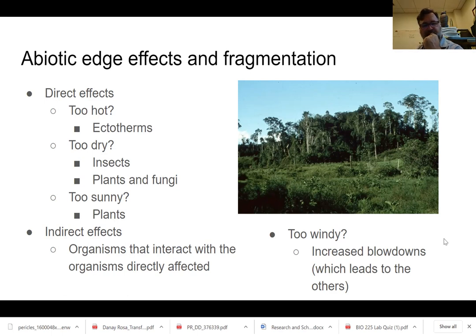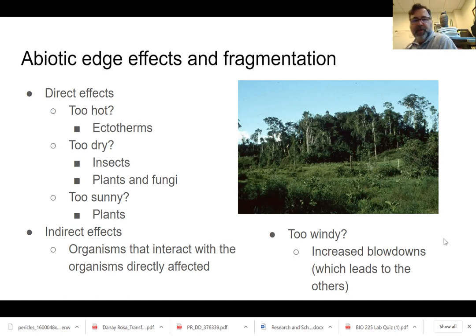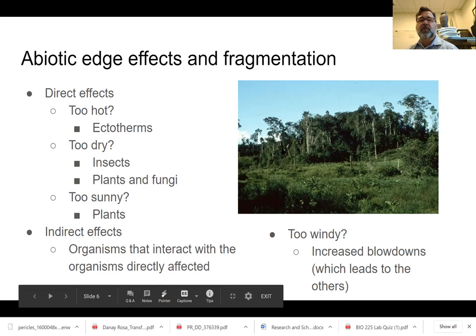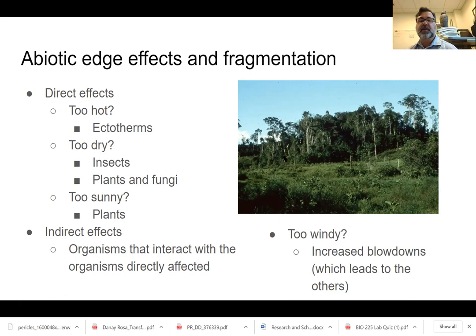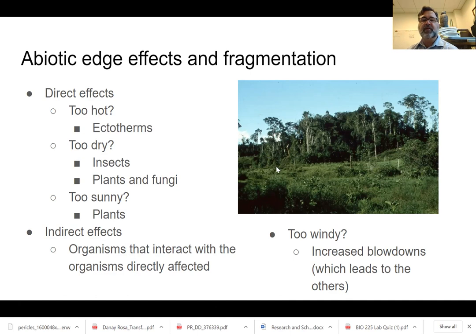Then you have indirect effects — the things that follow from the previous things. For example, if you rely on a particular plant for pollination and that plant disappears from the edge, that pollinator will disappear from the edge as well. Another direct effect that leads to indirect effects is wind. The prevailing winds hit this edge, and you can see the canopy on this side is much lower because there've been several blowdowns. Trees exposed to prevailing winds get knocked down, so you get really shrubby growth in response, with lots of light coming in through the missing canopy, creating very dense undergrowth.